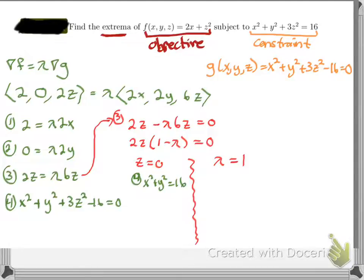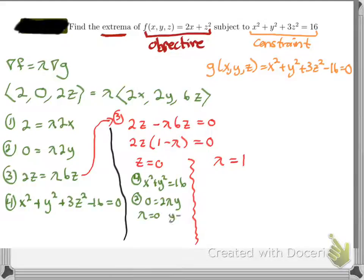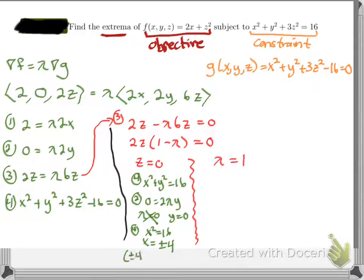I've used equations 3 and 4, so now I'll use equation 2, which has a zero making it easier. From 0 = 2λy, I get either λ = 0 or y = 0. But λ cannot be zero in Lagrange multipliers — that would give a zero gradient, which makes no sense — so y = 0. Going back to equation 4 with y = 0 gives x² = 16, so x = ±4.